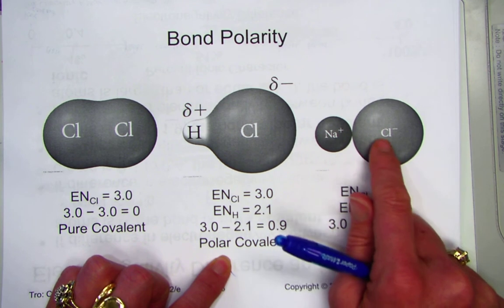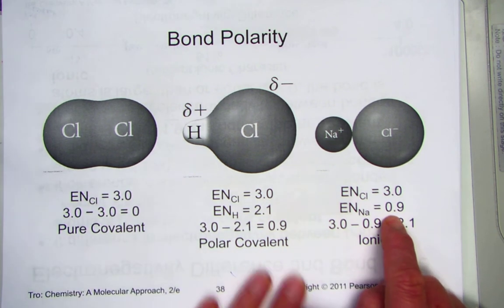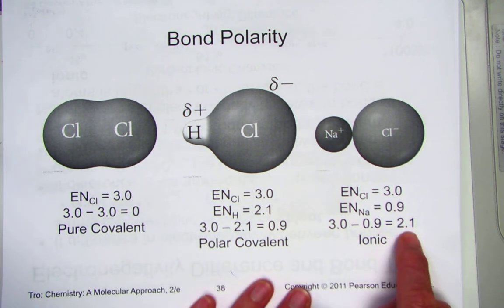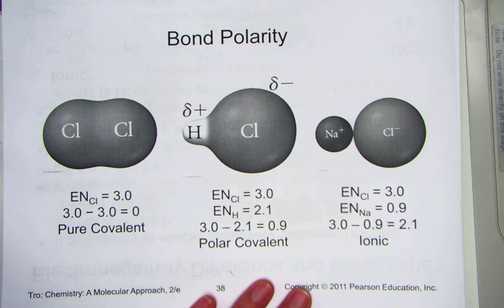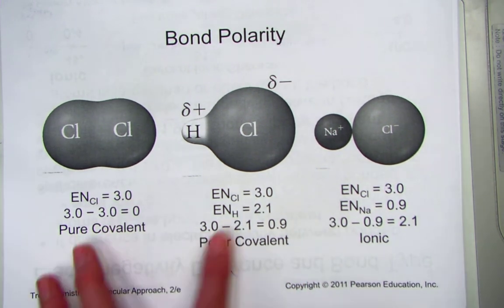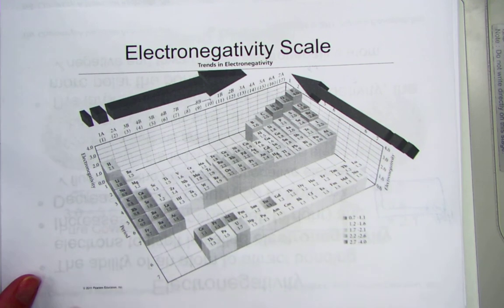Looking at NaCl, the electronegativity difference is again 3.0 for chlorine, 0.9 for sodium, which gives us a difference of 2.1. That is a number greater than 2, therefore that bond is known as ionic. These values are simply being found using this particular trend in electronegativity diagram right out of our chemistry book.